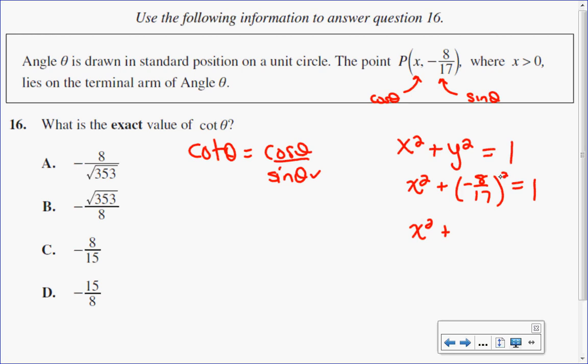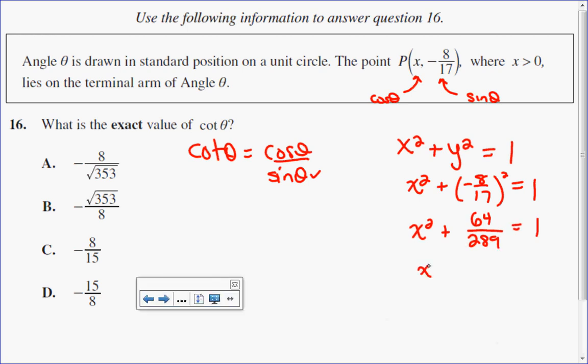x squared plus negative 8 squared is 64. 17 squared is 289 equals 1. To solve for x squared, I would subtract 64 over 289 from both sides.